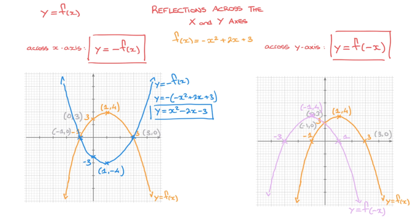This new curve's equation would be y equals negative, then negative x in parentheses squared, plus two times negative x, plus three. For the first term, negative x in parentheses squared equals x squared, so we have negative x squared. For the middle term, two times negative x turns into minus 2x. And we have plus three at the end. So the equation is y equals negative x squared minus 2x plus 3.